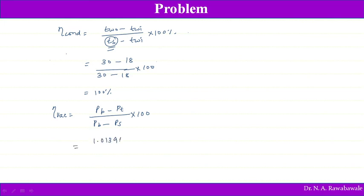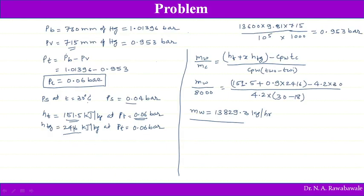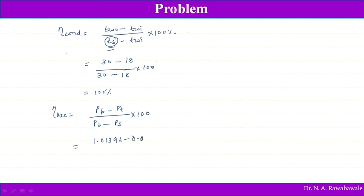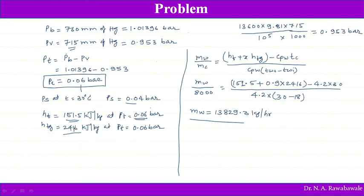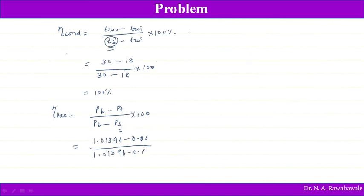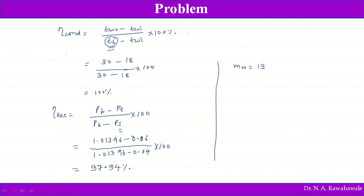Vacuum efficiency: PB = 1.01396, PT = 0.06, PS = 0.04 bar. Vacuum efficiency = (1.01396 − 0.06) / (1.01396 − 0.04) × 100 ≈ 97.2 percent. Summary of Problem 3 results: mass flow rate of cooling water MW = 13,829.3 kg/hr, condenser efficiency = 100 percent, and vacuum efficiency ≈ 97.2 percent.